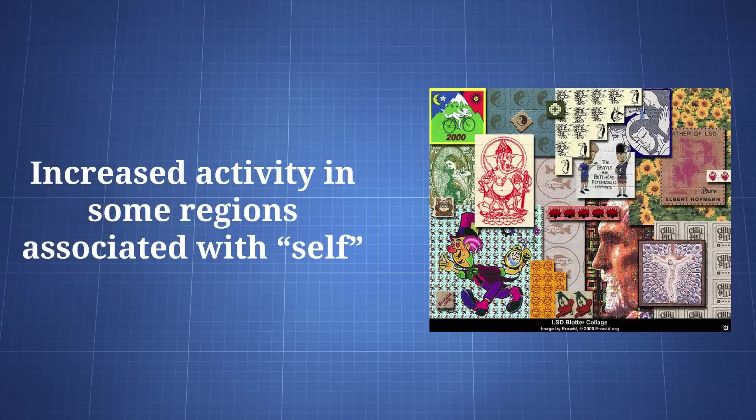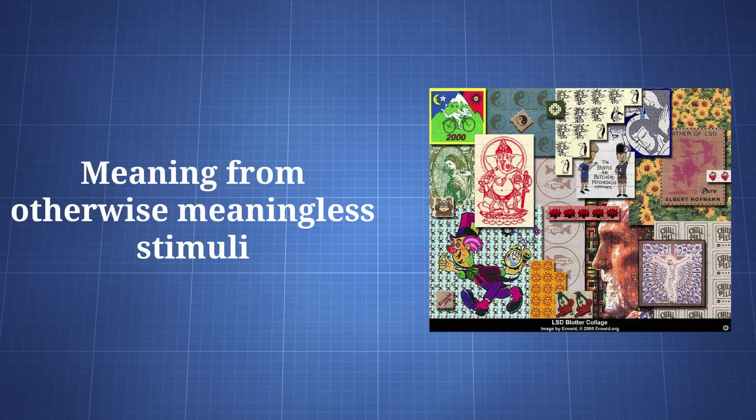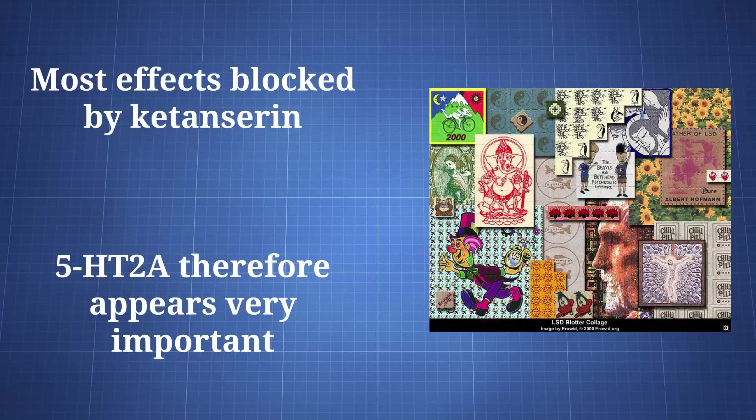LSD is capable of increasing activity in brain regions connected with the sense of self and the attachment of meaning to stimuli. This same activity appears to result in otherwise meaningless music taking on personal meaning under the influence of the drug. When someone is exposed to both LSD and ketanserin, a 5-HT2A antagonist, most of the aforementioned effects are blocked. This suggests 2A is connected to LSD's ability to increase personal meaning.